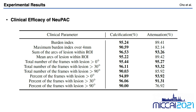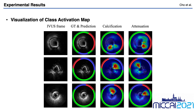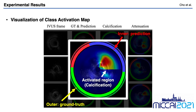In addition, we demonstrate the internal representation to understand what information NeuPAC uses, via GradCAM. This figure shows that NeuPAC pays attention to the relatively high-intensity region for IVUS classification, and to the shadow region or the area where the signal gradually disappears for IVUS attenuation.